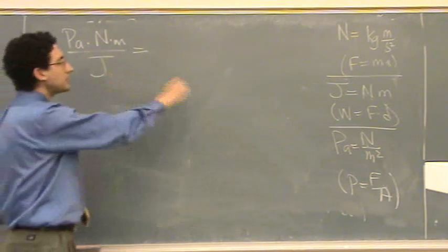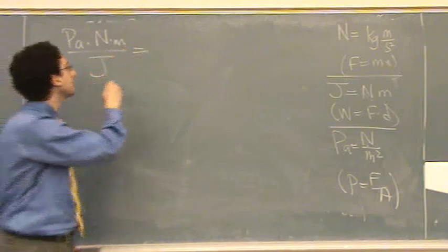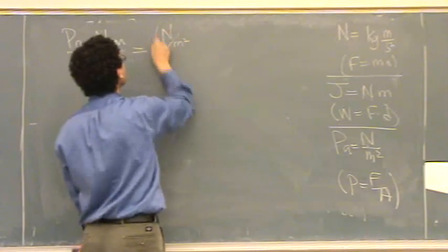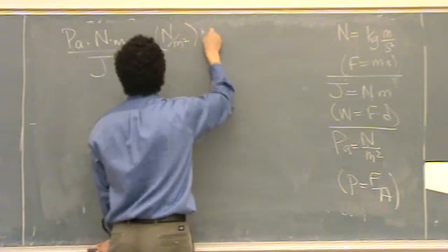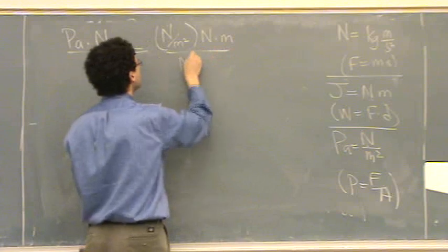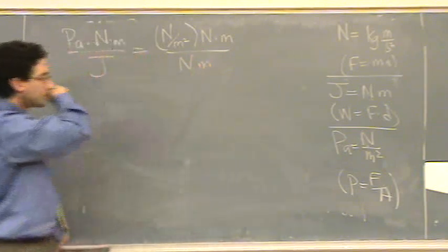Okay, so I'm going to use those to put in here. So a Pascal is a newton per meter squared. I'll leave the newton for a second. And then I have a meter. And then I have a joule, which is a newton meter.